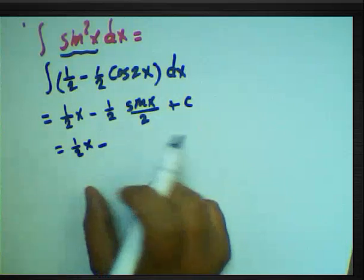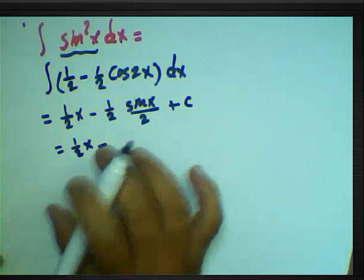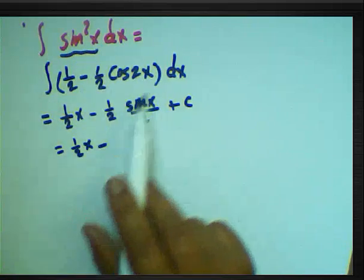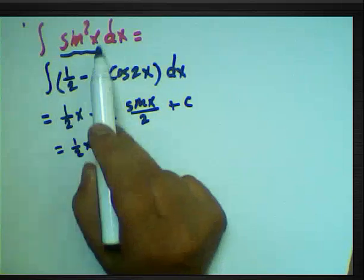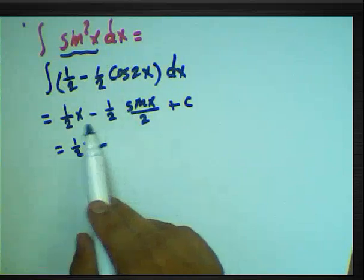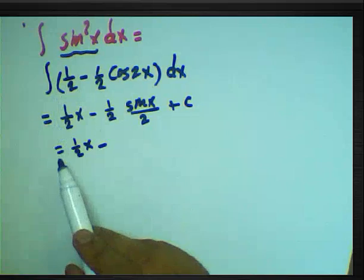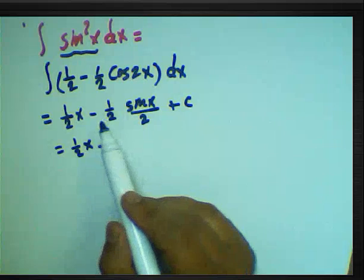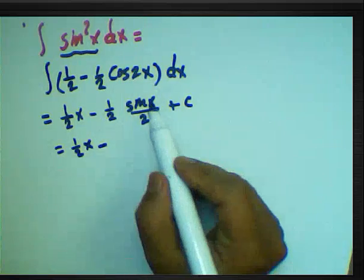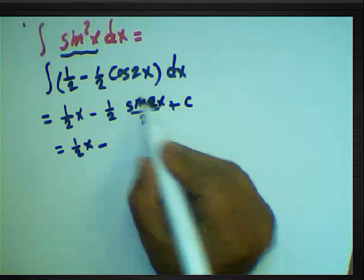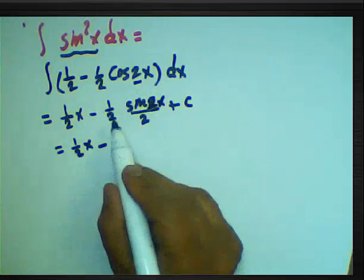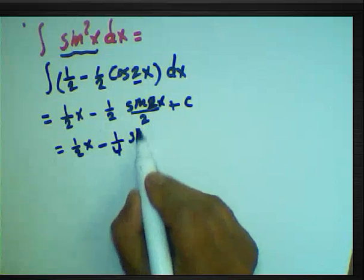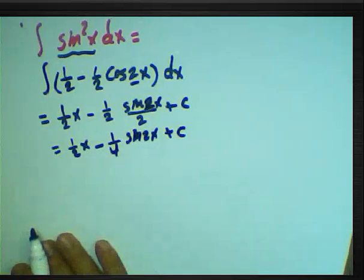Hello everybody. In this example I want to find the integration of sin²(x) dx. We know sin²(x) equals one-half minus one-half cos(2x). The integration of one-half is (1/2)x, and the integration of one-half cos(2x) — pulling the constant one-half out — gives sin(2x) over 2. So one-half times one-half equals one-quarter, giving (1/4)sin(2x) plus constant.